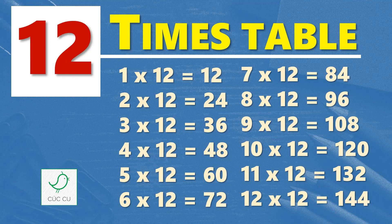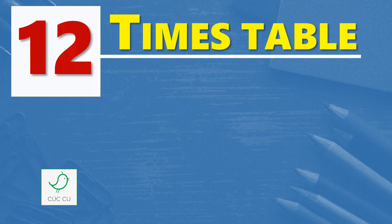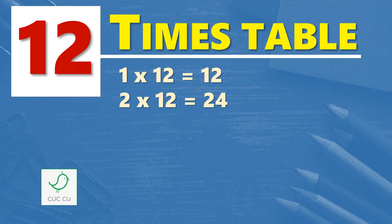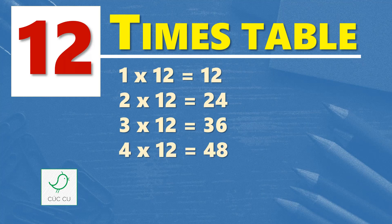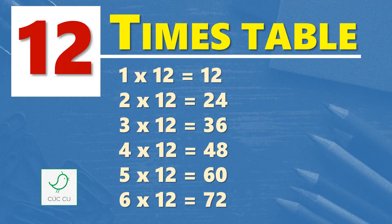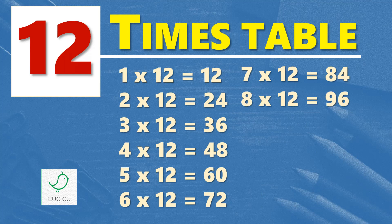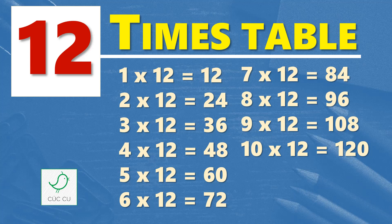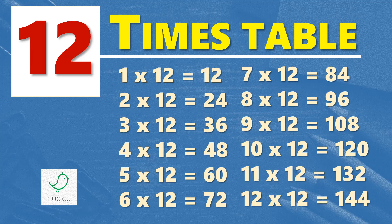Multiplication table of twelve. Twelve times table. One times twelve is twelve, two times twelve are twenty-four, three times twelve are thirty-six, four times twelve are forty-eight, five times twelve are sixty, six times twelve are seventy-two, seven times twelve are eighty-four, eight times twelve are ninety-six, nine times twelve are one hundred and eight, ten times twelve are one hundred and twenty, eleven times twelve are one hundred and thirty-two, twelve times twelve are one hundred and forty-four.